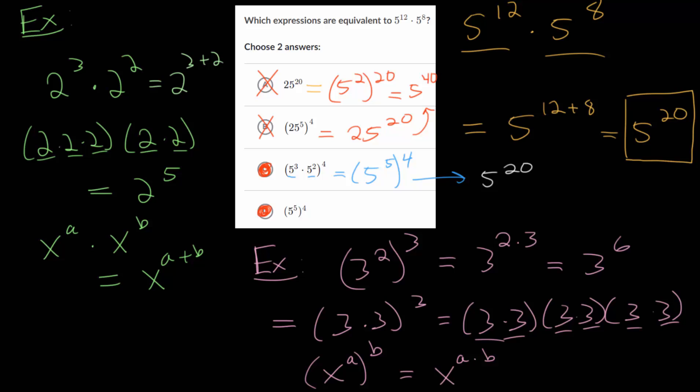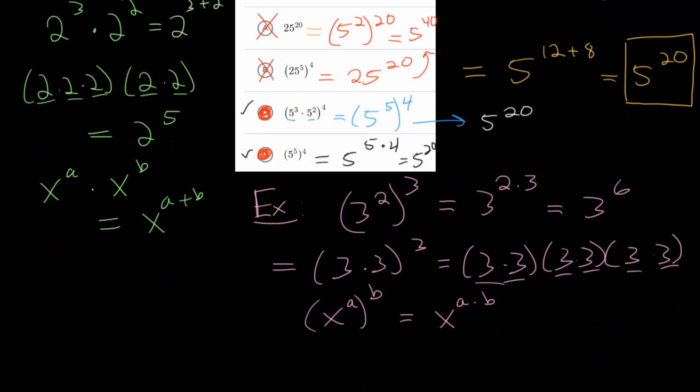Likewise, you have the same scenario here, 5 to the 5th then raised to the 4th. So you multiply those exponents. That's really 5 to the 5 times 4, which again is just 5 to the 20th power. So these did make sense when we went through and actually checked them, rather than just relying on eliminating the first two. With that in mind, let's look at some other examples.